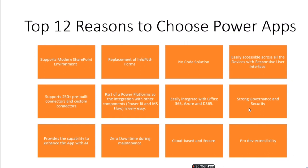Power Apps provides strong security with multi-factor authentication capability, and it also has the capability to enhance the app with artificial intelligence. There is zero downtime during maintenance — everything is online. No need to keep a site down; we can directly make development changes on the live platform and publish once our work is completed. It is cloud-based and secure, so no need to maintain hardware. Additionally, there is production and development extensibility — you can create different environments, one for development and one for production, where you first develop the application and then move it to production.